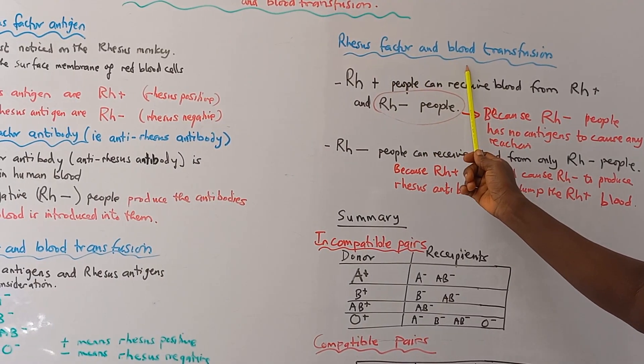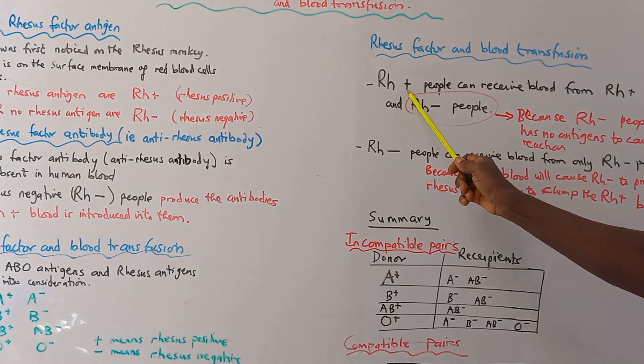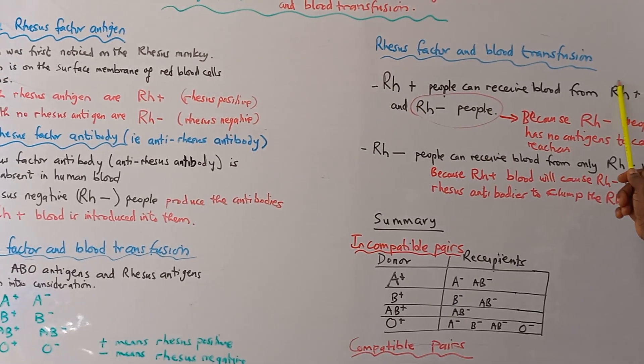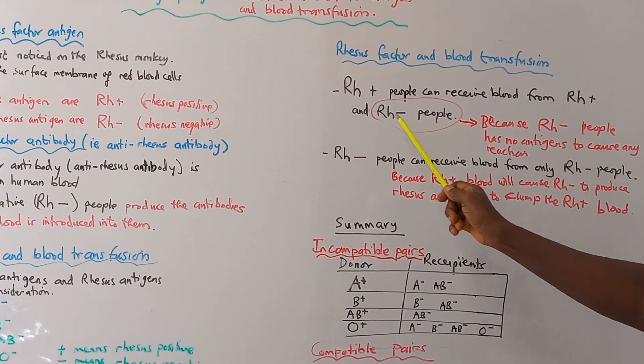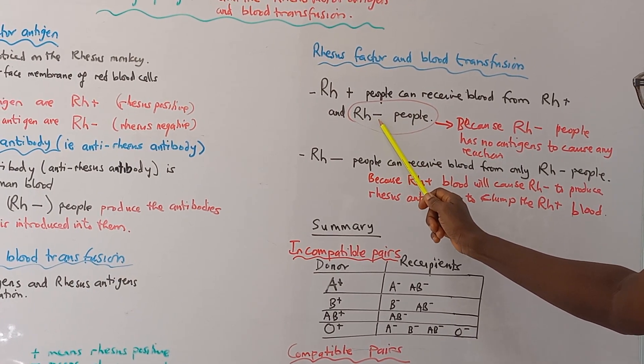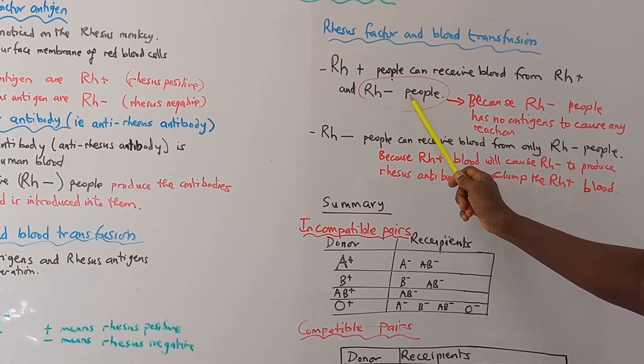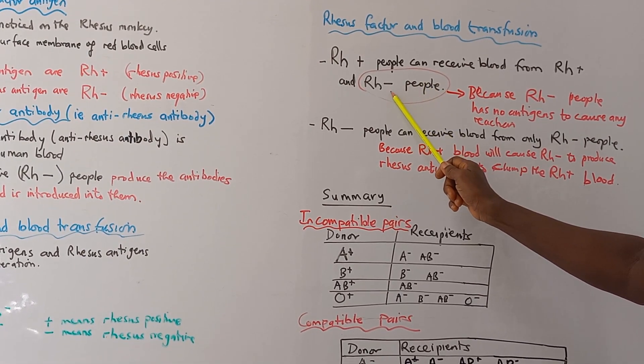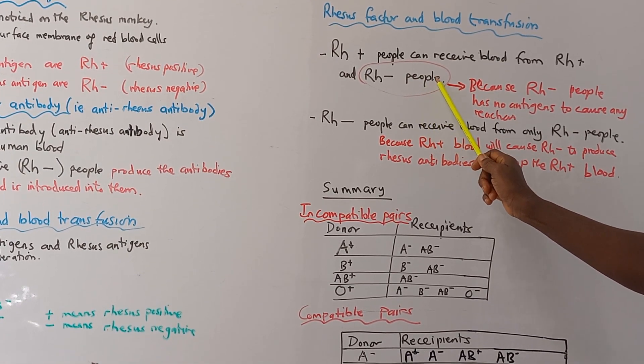During blood transfusion, Rhesus positive people can receive blood from Rhesus positive people and also from Rhesus negative people. It's because the Rhesus negative people do not have any antigens that will produce any reaction.